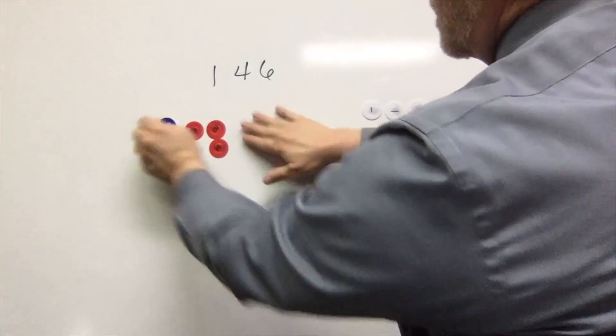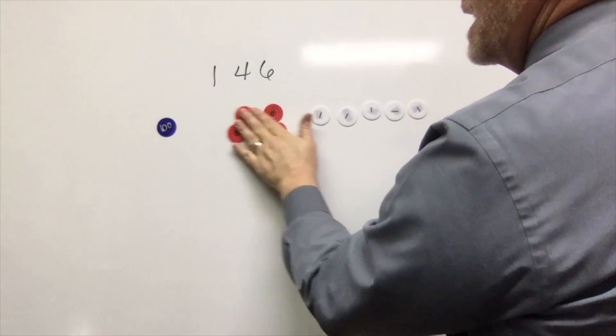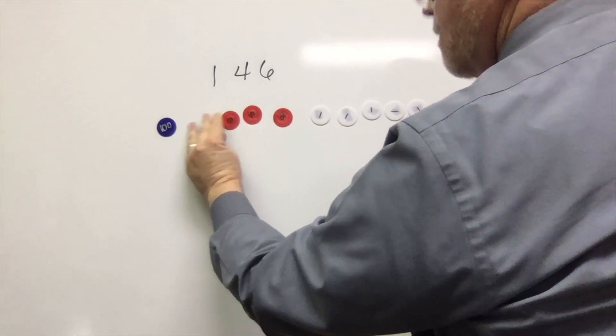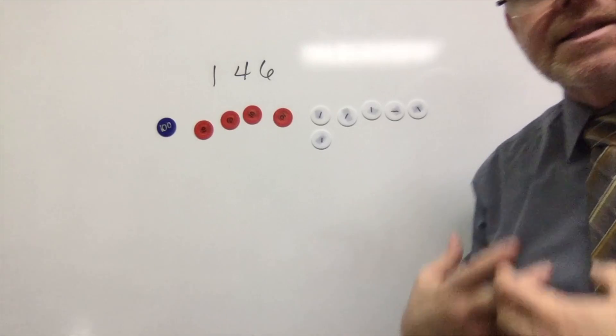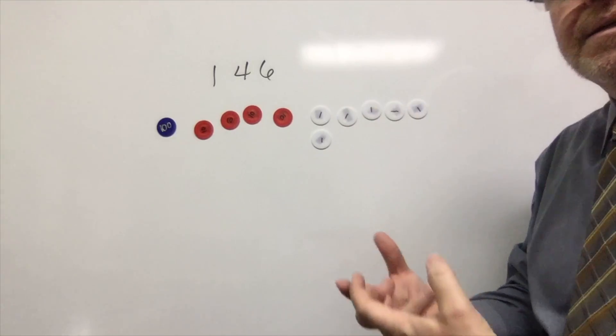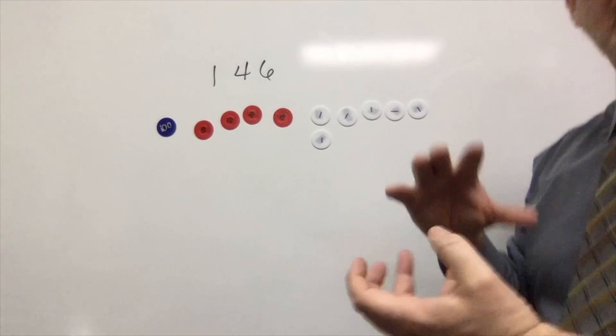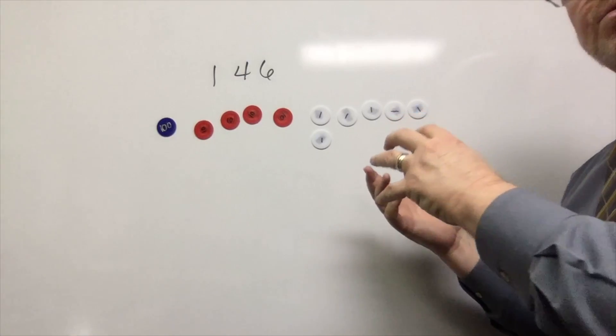Because I can still see that this is representing a hundred no matter where it is on my board. So let's get it back to 146. That's where I start: identifying what place value disks are and how to use them.